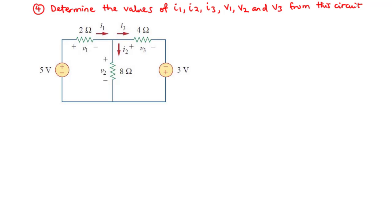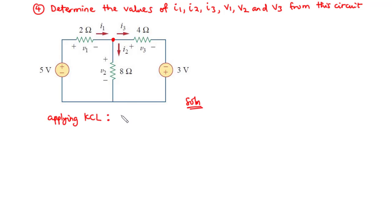For the last question, we are going to determine the values of I1, I2, I3, V1, V2, and V3 from this circuit. The first thing we are going to do is apply KCL at this node. Applying KCL at that node, current entering equals current leaving, so I1 equals I2 plus I3. Let's call this equation 1.